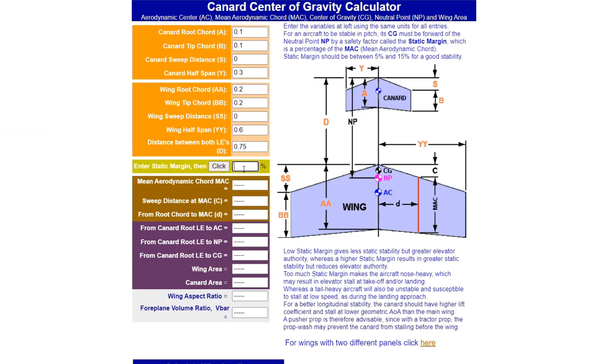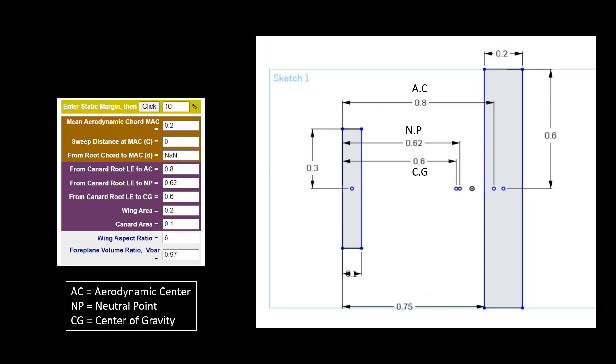Once you have entered all this information, select a static margin, ideally between 5 to 15%, and click on this button. Now you will have an idea of where the aerodynamic center and the neutral point are and where the CG should be. All of this information is measured from the canard's root leading edge. You can go back to your sketch and mark these points.